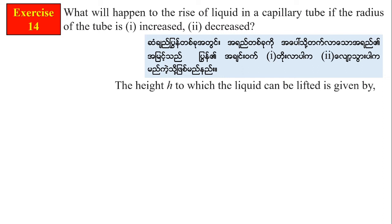The height to which the liquid can be lifted is given by H = 2T cosθ / (ρ g r). Since H is inversely proportional to r, if the radius is increased, the height will decrease.